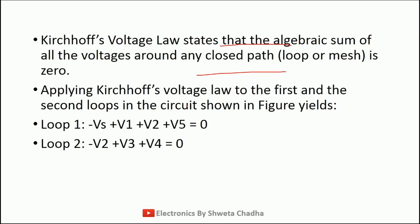In loop number 1, the equation will be: minus Vs plus V1 plus V2 plus V5 is equal to 0. In loop number 2, the equation comes out to be: minus V2 plus V3 plus V4 is equal to 0. You can also check my KVL and KCL video to understand how to write down these equations.